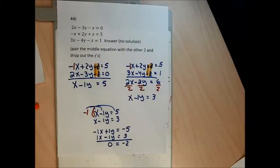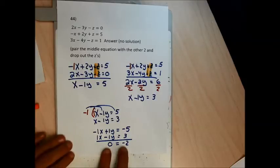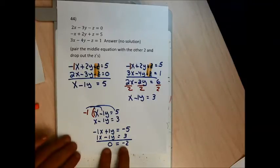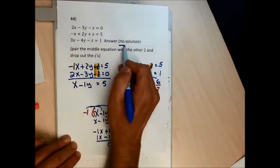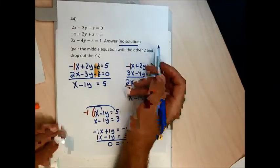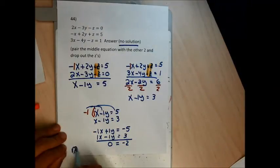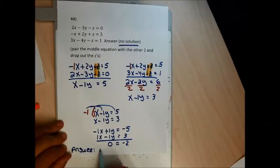Now step three: stack x minus y equals 5 and x minus y equals 3 and solve. I'll multiply the top by negative 1: negative x plus y equals negative 5, then add to x minus y equals 3. All letters cancel — x's and y's both drop out — and on the right side I get negative 2. That's a false statement. Since all letters drop out and a false statement remains, this system has no solution — it's inconsistent.